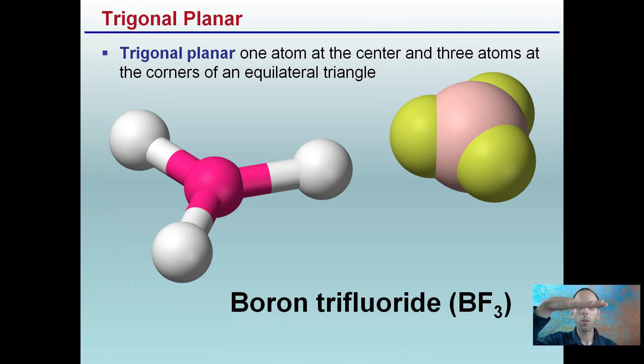So it's trigonal, there's three of them, and they're all on the same plane. So that is a way you can easily identify and recognize a molecule of this shape. Boron tetrafluoride is an example. I'm more concerned that you can recognize the shape and identify it.